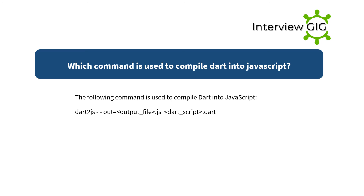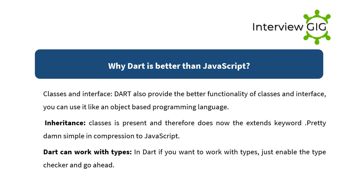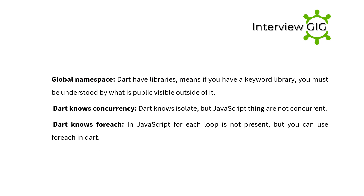Which command is used to compile Dart into JavaScript? The command is: dart2js --out=output_file.js dart_script.dart. Why is Dart better than JavaScript? Dart provides better functionality for classes and interfaces, supports inheritance with the extends keyword, supports types via a type checker, has libraries to manage namespaces, knows concurrency through isolates (unlike JavaScript), and supports for-each loops natively (which JavaScript does not have natively).